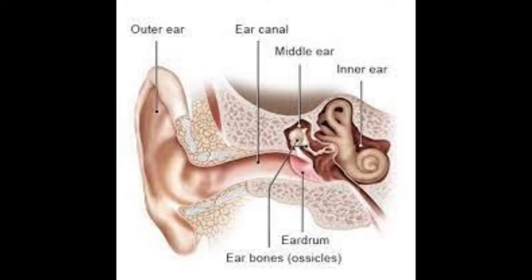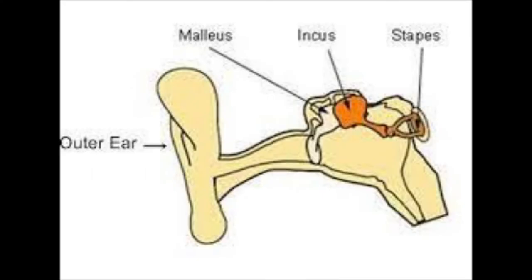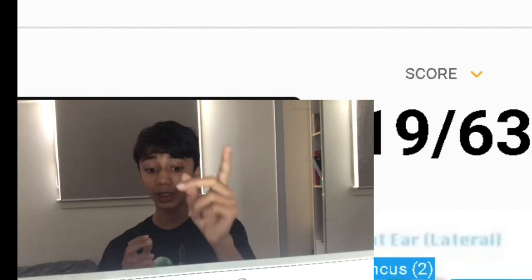Next we come to the three ear bones. The malleus, incus and stapes. The stapes is the smallest bone in the human body.